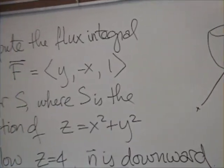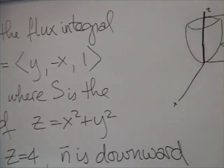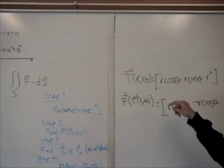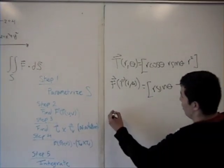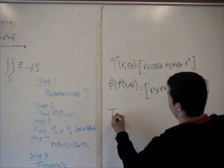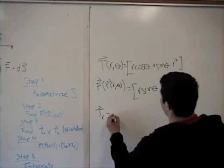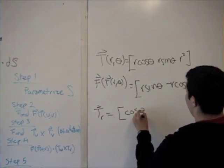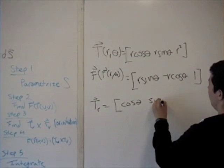Then step three is just to cross the partial of this with respect to r and partial with respect to θ. So we find T_r, which is <cos(θ), sin(θ), 2r>.